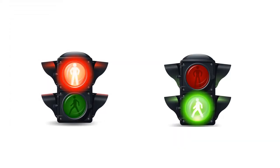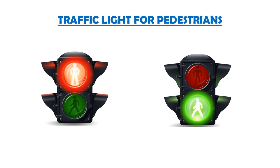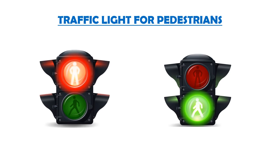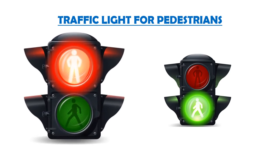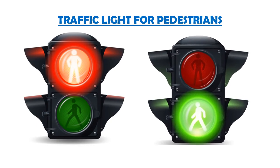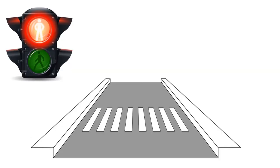Now look here — this is a traffic light for pedestrians. It has only two signals: red with a picture of a standing man, and green with a picture of a walking man.